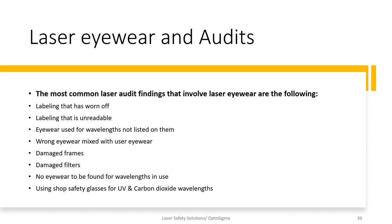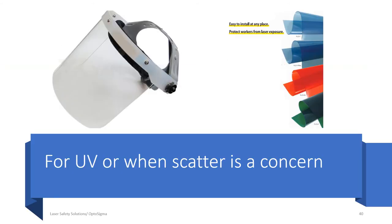Further audit findings include frame damage, filter scratches or burn marks, no eyewear available for the wavelengths in use, and using shop glasses for UV and carbon dioxide wavelengths. This is found a lot in medical facilities where they know polycarbonate absorbs CO2 and UV but do not want to buy certified laser eyewear. When dealing with ultraviolet, you are concerned not just about eye exposure but also skin exposure and skin cancer — in cases with significant scatter, wearing a full face shield may provide greater protection.